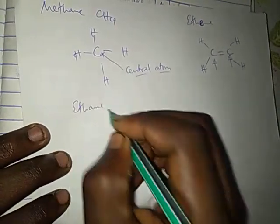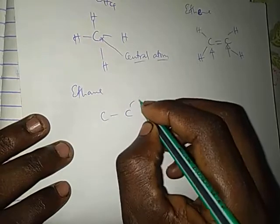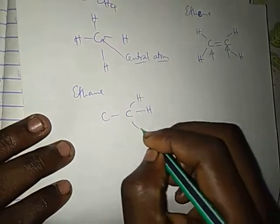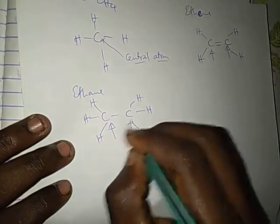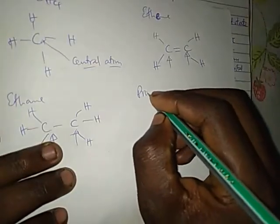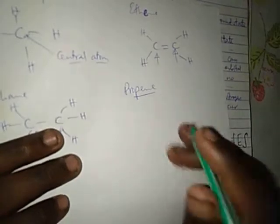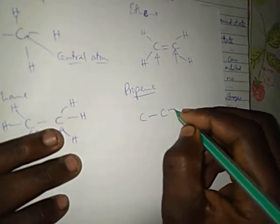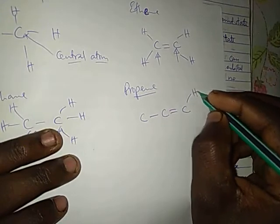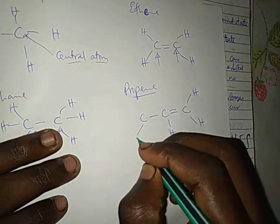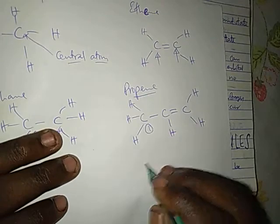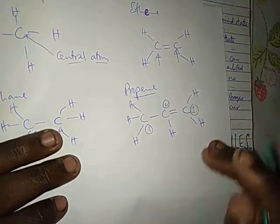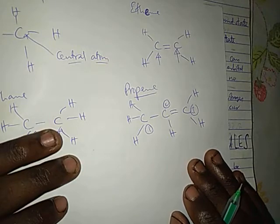So for the case of ethane, it could be carbon single bond carbon, then hydrogen, hydrogen, hydrogen on one side, and hydrogen, hydrogen, hydrogen on the other. What is the hybridization of this carbon or that carbon? And also in the case of propane, you have carbon, carbon, carbon — with hydrogens on each — so what is the hybridization of carbon number one, carbon number two, and carbon number three?